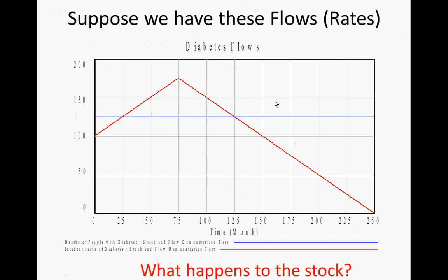Suppose now we had diabetes flows where incident cases started at 100 people per month and rose, but deaths of people with diabetes started at about 125 per month and went flat. What happens now to the stock of people with diabetes? It's decreasing because the net flow is negative — the blue outflow is greater than the red inflow. Then what happens at the point where they cross? No change, because inflow equals outflow. And after that, it's going to decrease ever faster.